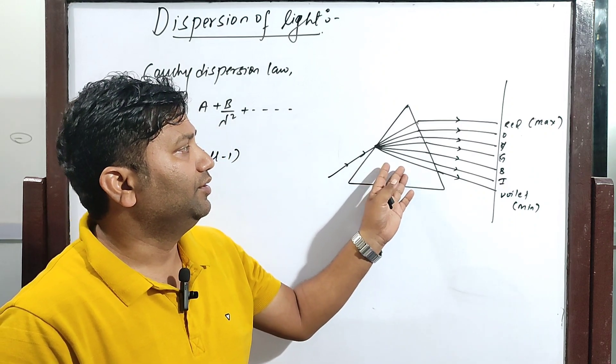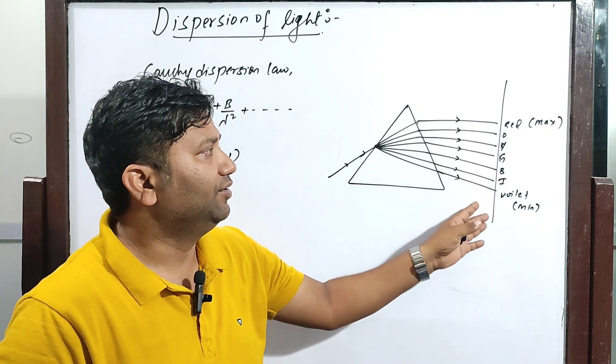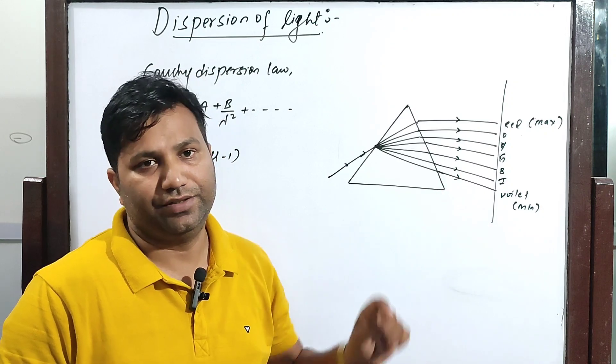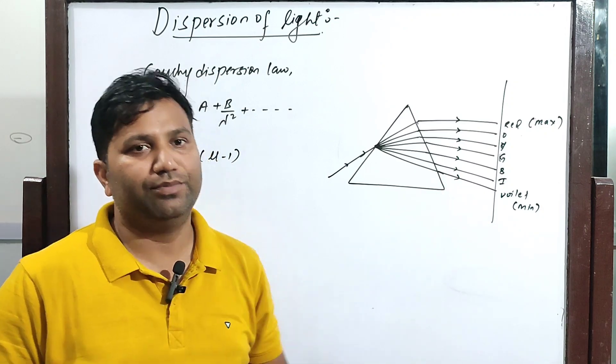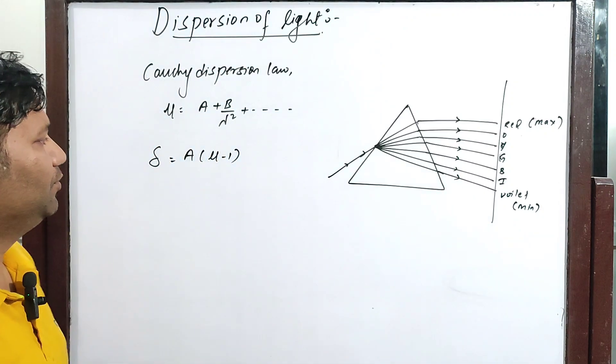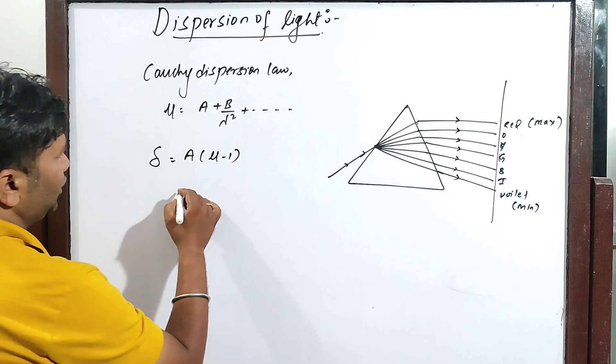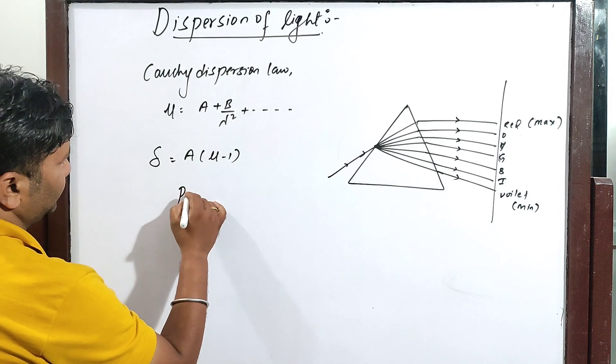The colorful band formed on the screen when white light passes through the prism is known as a spectrum. We will now discuss the pure spectrum and impure spectrum.